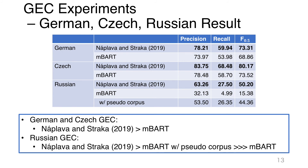Considering Russian GEC, the multilingual BART model shows much lower scores. This may be because the training data for Russian GEC are scarce compared to those of German or Czech. To investigate the effect of corpus size, we initially fine-tuned the multilingual BART model with a 10 million pseudo-corpus. Multilingual BART with the pseudo-corpus achieved much higher scores than without it, supporting our hypothesis.